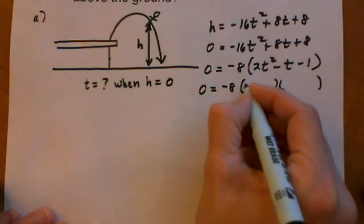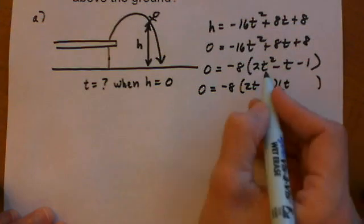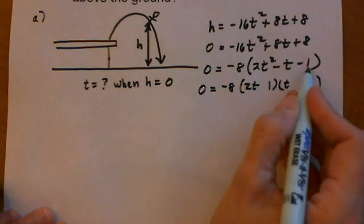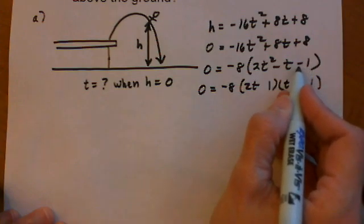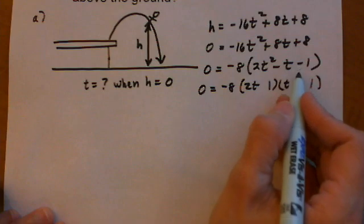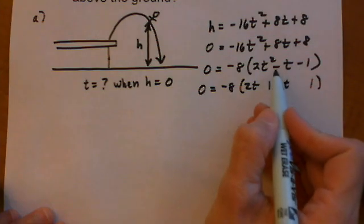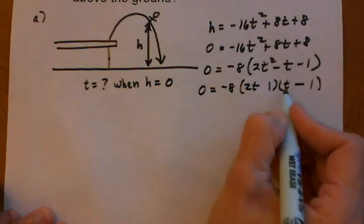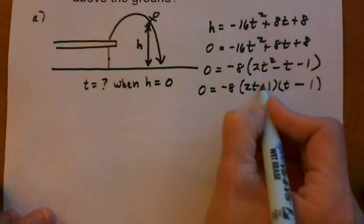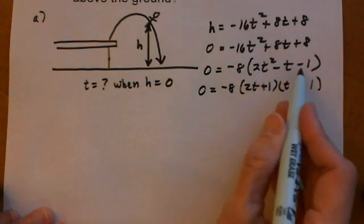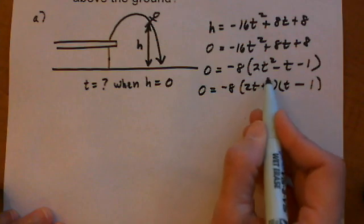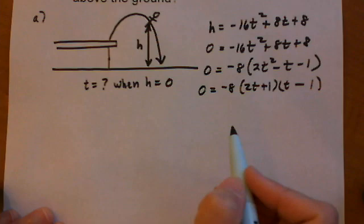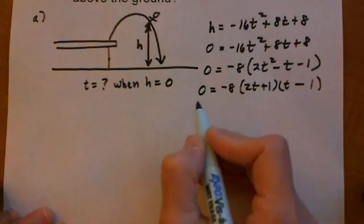So 0 equals negative 8. So we're going to have two binomials. And we'll start with 2t and t. And that gives us 2t squared. And for the last terms, we want 1 and 1. And they need to be opposite signs because of this minus sign. And we also want the larger middle term to be a negative. So that means the 2t times the 1 I want to be a negative, and the 1t times the t to be a positive. And mentally check to make sure it gives you the right trinomial. So 2t squared minus 2t plus t is minus t minus 1. Yeah, that's fine.